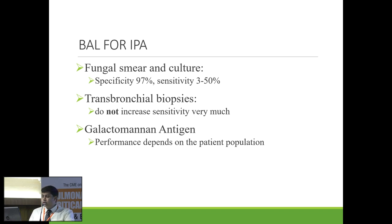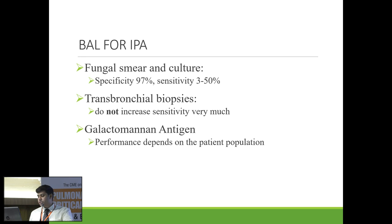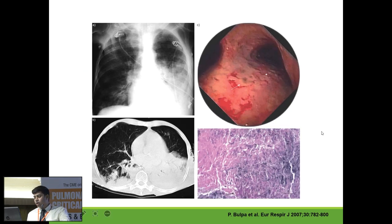BAL fungal smear and culture is highly specific, with sensitivity of about 3 to 50%. If it is positive, it is positive. Transbronchial biopsies do not increase sensitivity much above BAL, so they must be done under very controlled circumstances. Bronchoscopic appearance of invasive Aspergillosis shows black marks with vascular hyperinflammation surrounding them. One patient presented with bilateral pneumonia and ARDS, with fungal hyphae seen in the endobronchial lung biopsy.